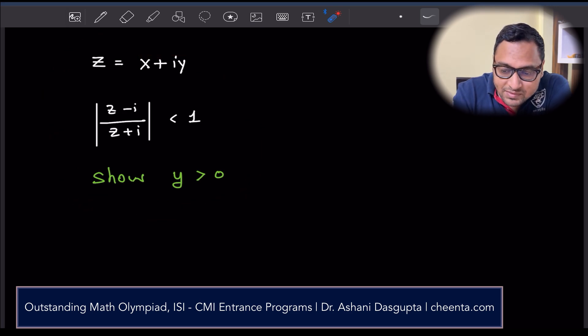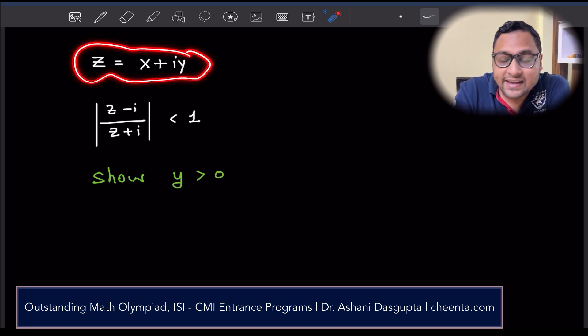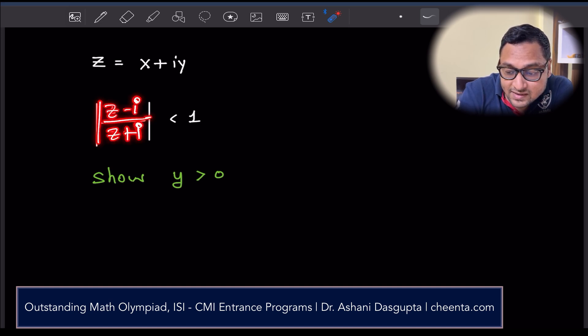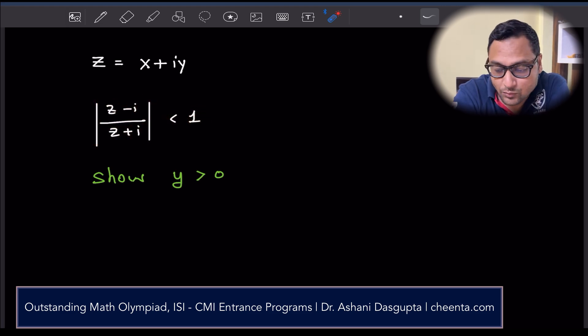The problem says that z equal to x plus iy is a complex number such that the absolute value of (z minus i) divided by (z plus i) is less than 1.